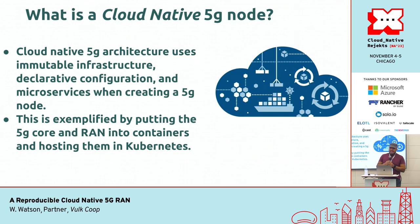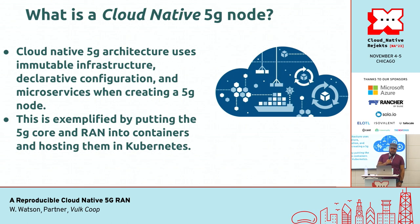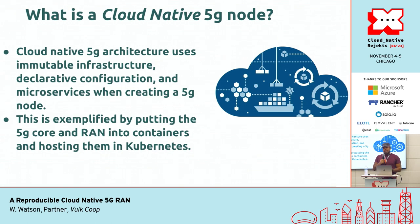So what is a cloud-native 5G node? We know the trifecta of cloud-native: immutable infrastructure, declarative configuration, and microservices. It's just putting a 5G node inside of that architecture. That's exemplified by containerizing the 5G node — which is a RAN and a 5G core — and putting it in Kubernetes.